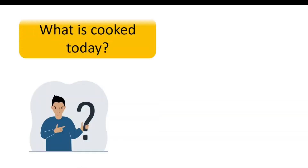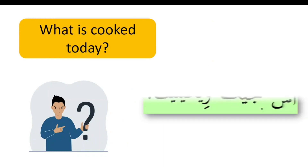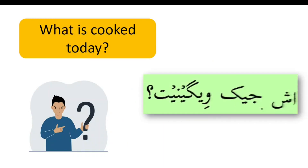Next sentence: What is cooked today? Ash jayk veginat. Ash means today, jayk means what is, veginat means cooked. What is cooked today? Ash jayk veginat.